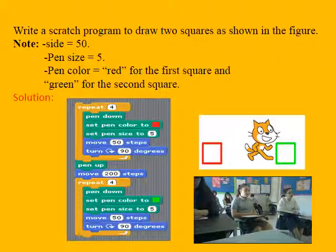is 50, pen size equals 5, pen color red for the first square and green. So how do we draw two squares above?